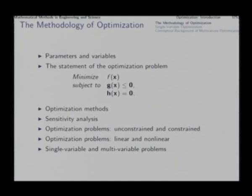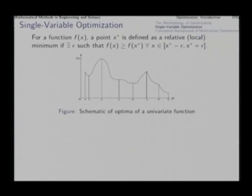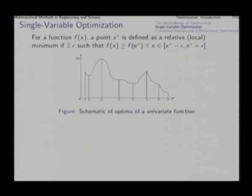Before going to multivariate optimization methods, let us quickly recapitulate single variable optimization. For a function f(x) of a single variable, a point x* is defined as a local minimum point if there exists some epsilon such that the function value at all other points in that epsilon-neighborhood is greater than or equal to the function value at x*.